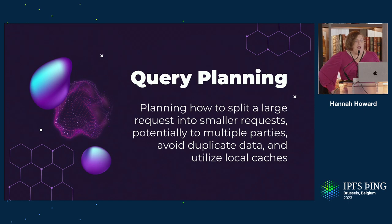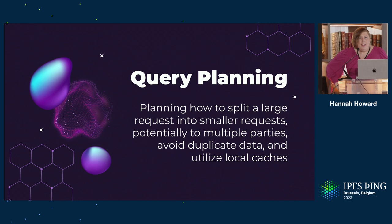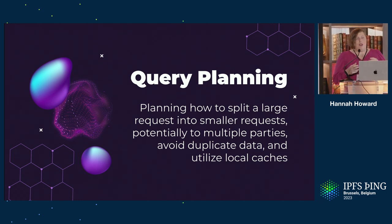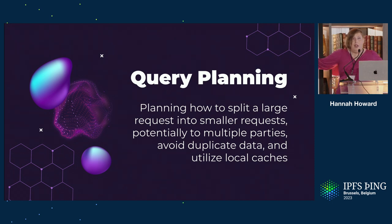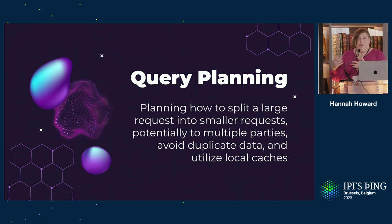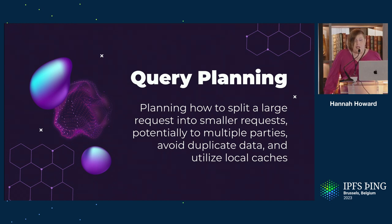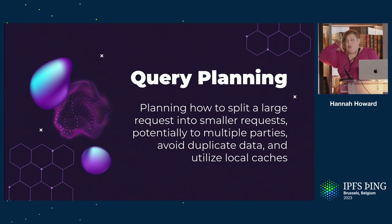A concept that will come up a lot, especially on the client side, is how you plan your queries — how you decide to request data. Often you're moving a lot of data, maybe a 32-gigabyte Filecoin CAR file or a DAG that's much bigger. How do you plan to get that in one or multiple requests? How do you find it, potentially split it among multiple parties, avoid duplicate data, and effectively utilize local caches?